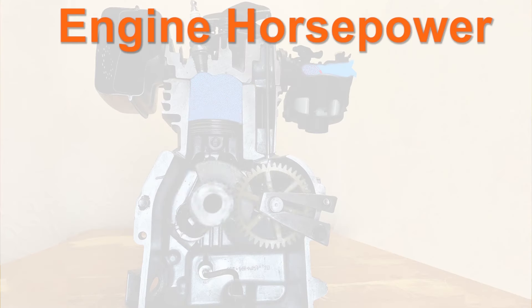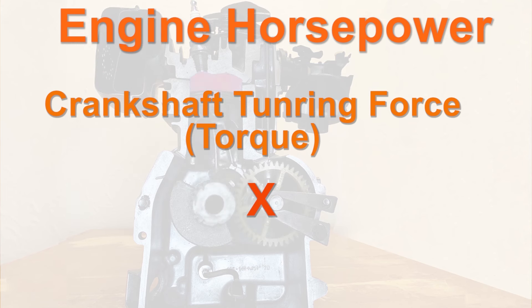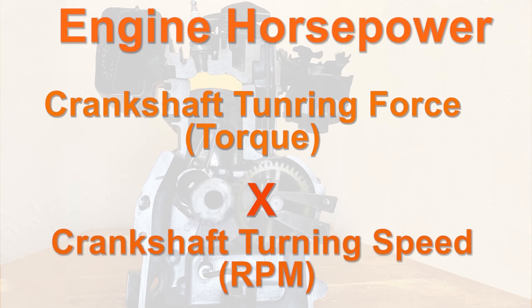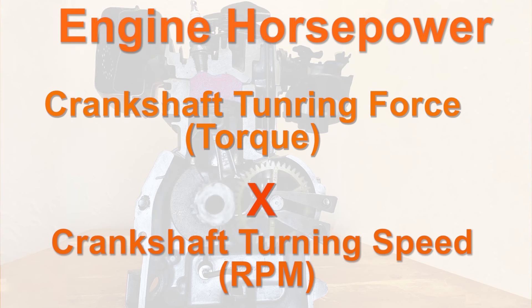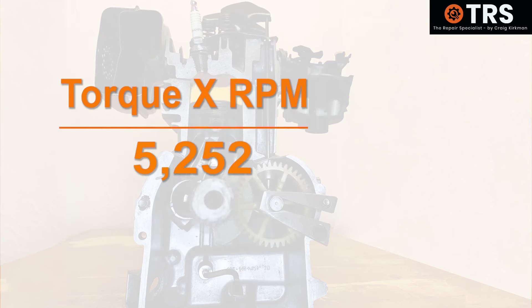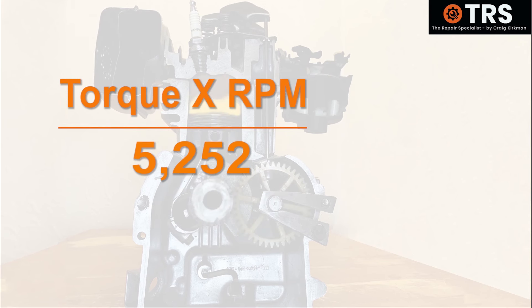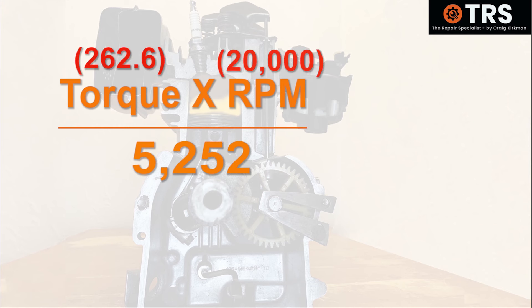The calculation of engine horsepower is simply the turning force of the crankshaft — the torque — multiplied by how fast it is turning in revolutions per minute, then divided by 5252. So using the torque value of our racing car, which is 262.6 pound-feet, we'll multiply that by the 20,000 RPM.